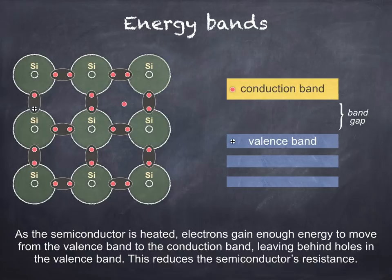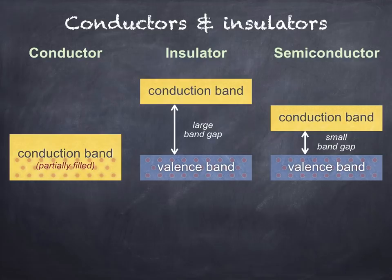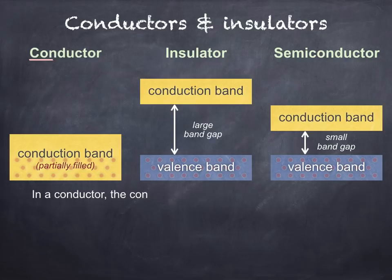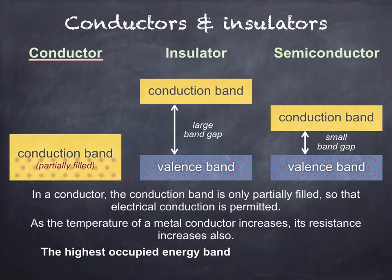Next, we'll look at energy bands in a little more detail. We only need to consider the valence band and the conduction band in order to explain electrical properties of semiconductors, and for that matter, conductors and insulators. In order for a material to conduct, it must have electrons which are free to move within its conduction band, or holes in its valence band. In a conductor, conduction can be explained by considering only the conduction band — the conduction band is only partially filled, so electrical conduction is permitted.